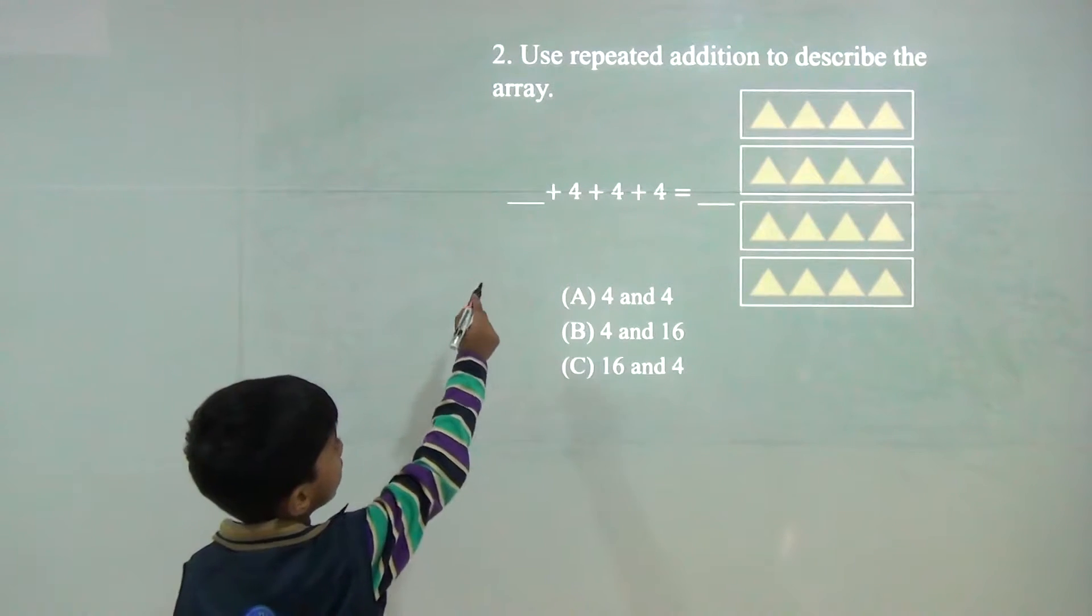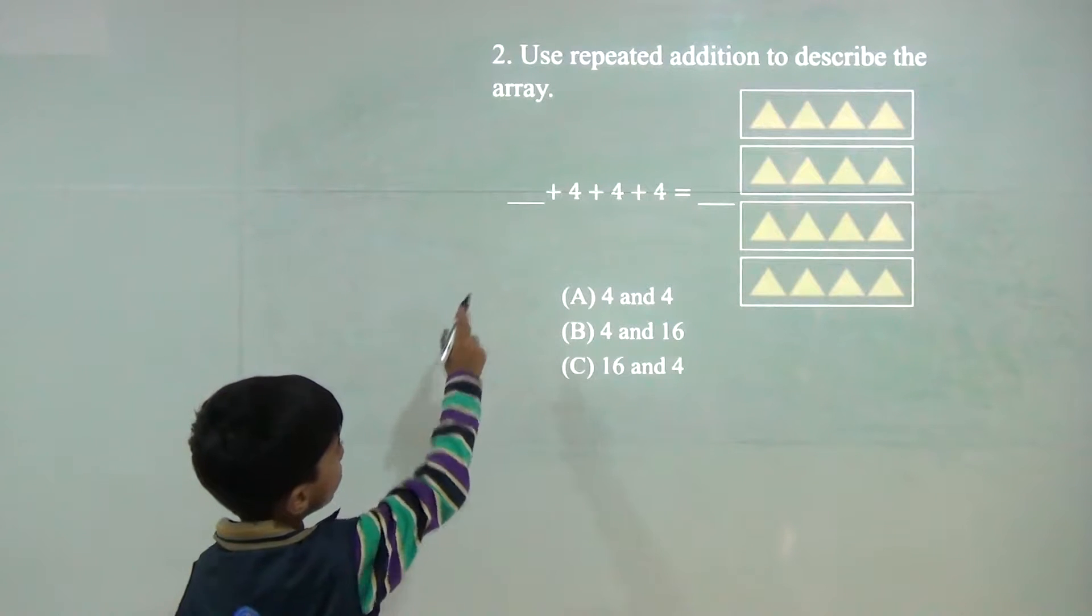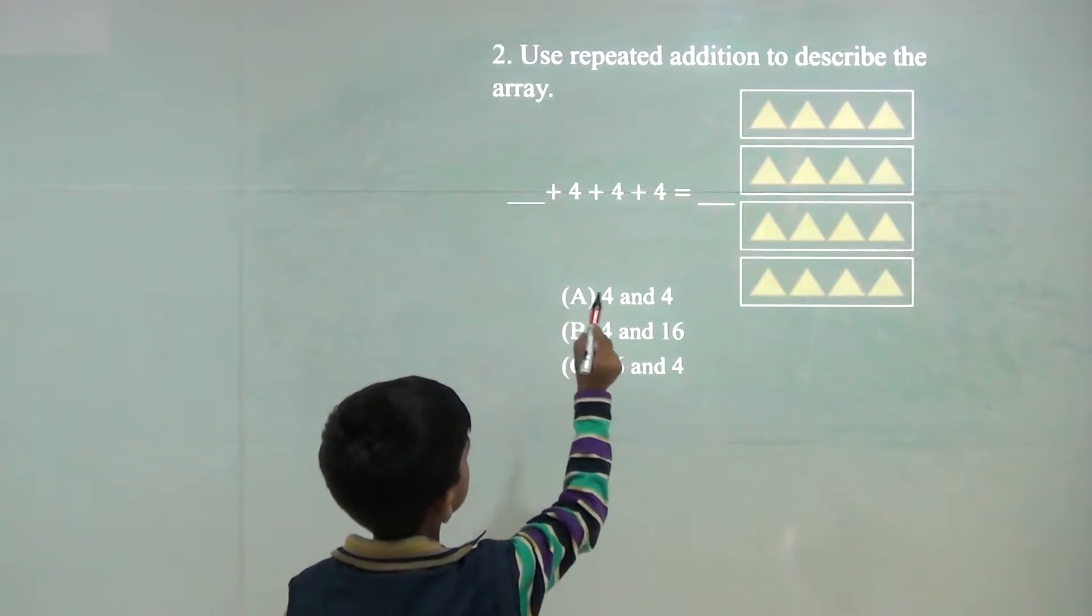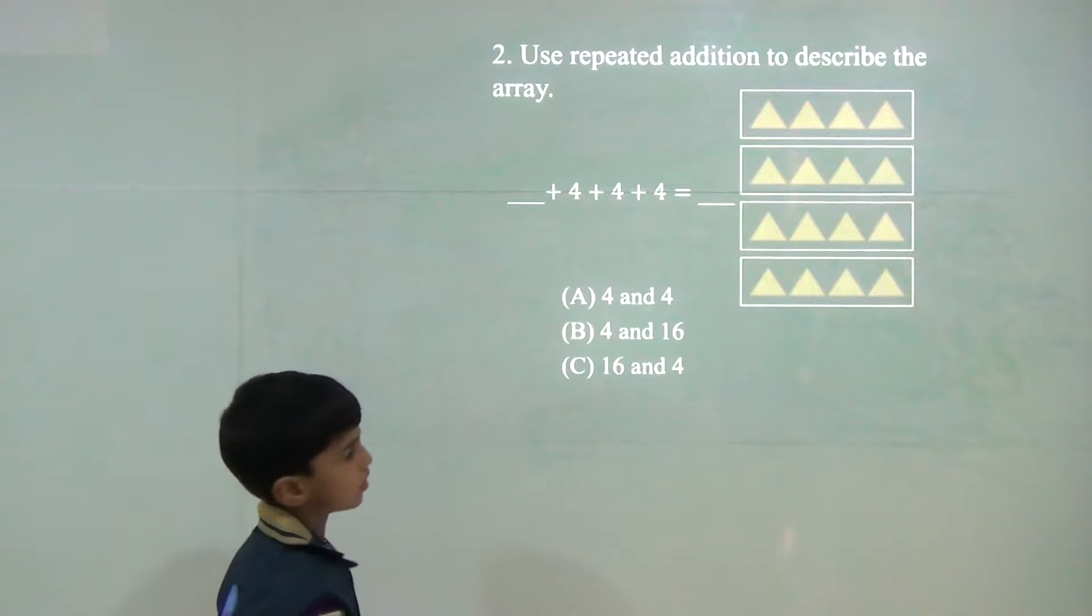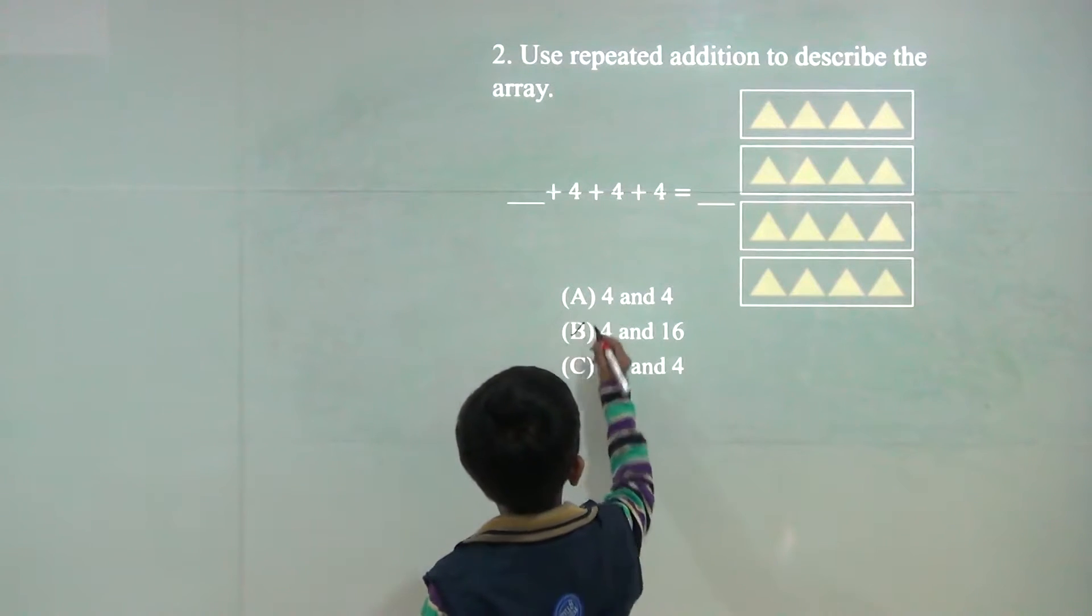Now here will come 4 and 4. 4 for the would be 16. So the answer would be 4 and 16.